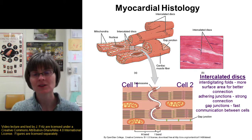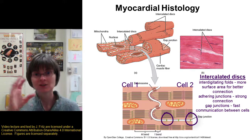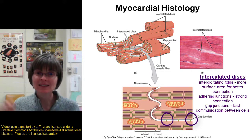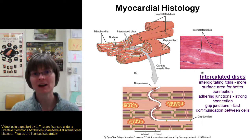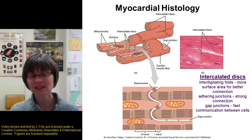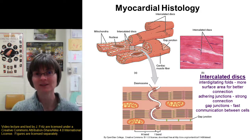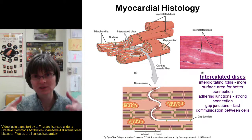The third feature of the intercalated discs are the gap junctions. Gap junctions open a little tunnel between two cells, allowing signals to pass directly from one cell to another through those tunnels — really nice for fast communication. This is very important with cardiac muscle, because when one cardiac muscle cell gets the signal to contract, that signal spreads through all the cardiac muscle cells and they all contract at the same time. That's how the heart coordinates its contraction so all cells work together.